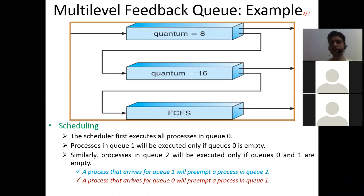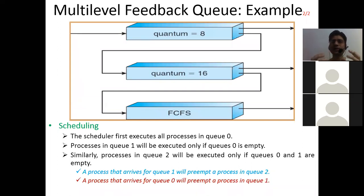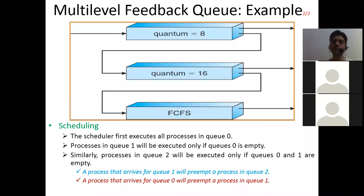So this is the concept of multi-level feedback queue, which is actually implemented in computer systems because we need a flexible system which can identify when to send a process into foreground and when to send it to the background. We need a system in which all processes get a fair share of the CPU for execution of their activities and can have whatever hardware resources they require.